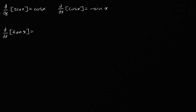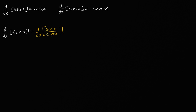This is the same thing as finding the derivative with respect to x of tangent of x, which is just sine of x over cosine of x. And since it can be expressed as the quotient of two functions, we can apply the quotient rule here.